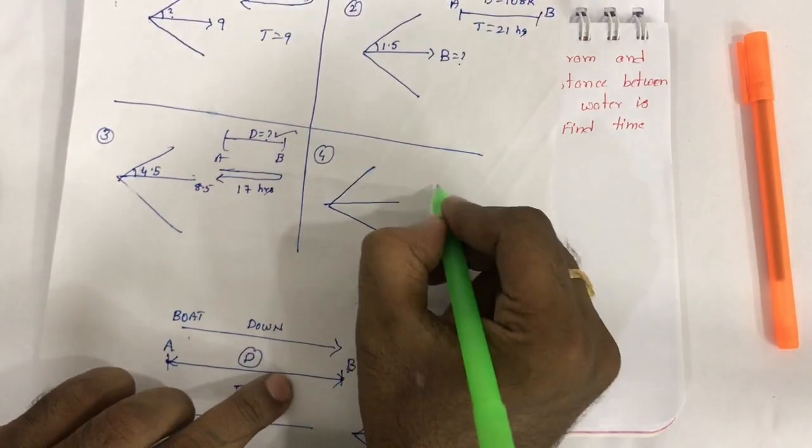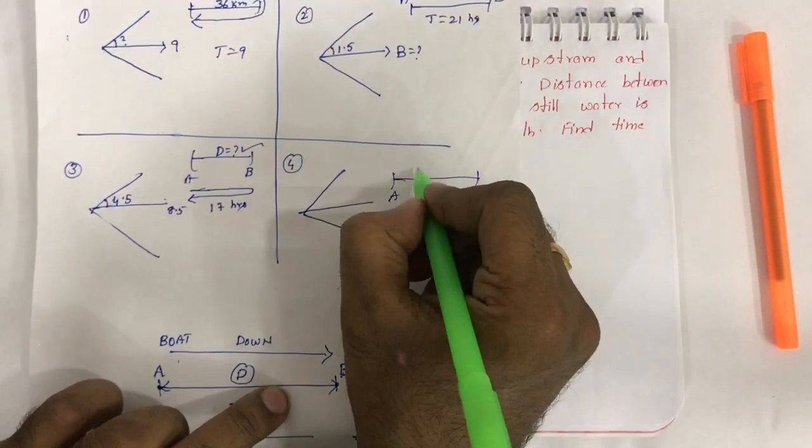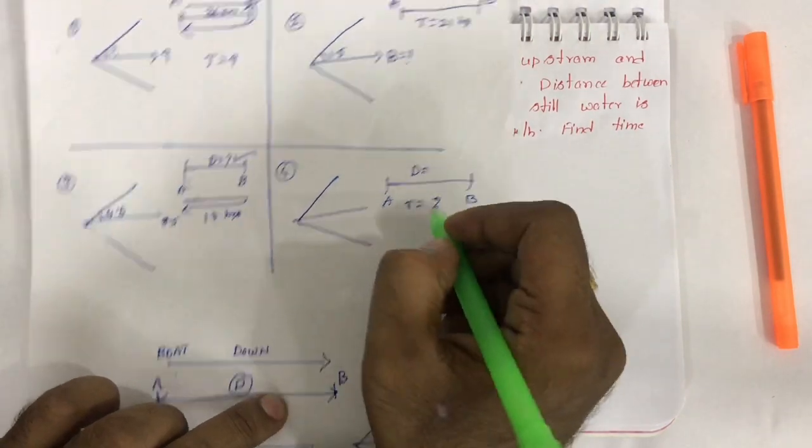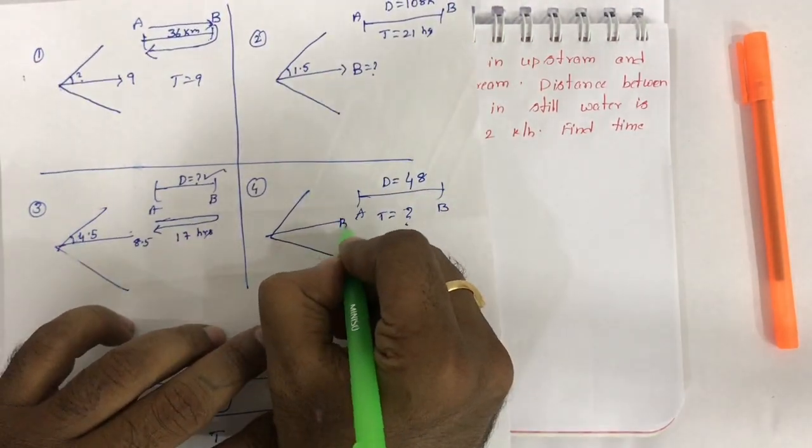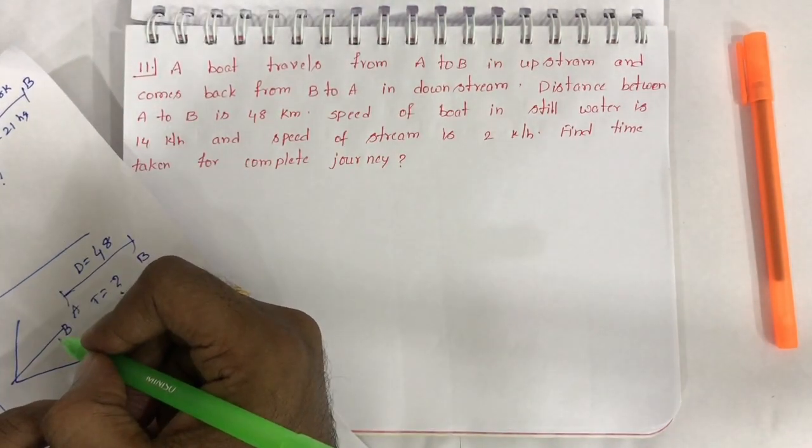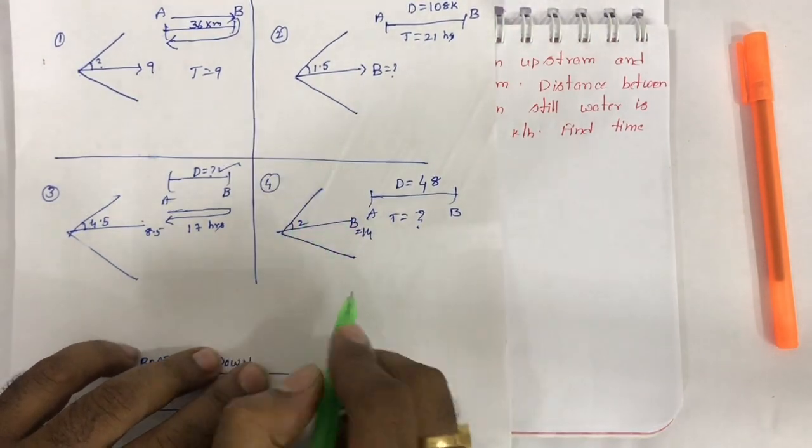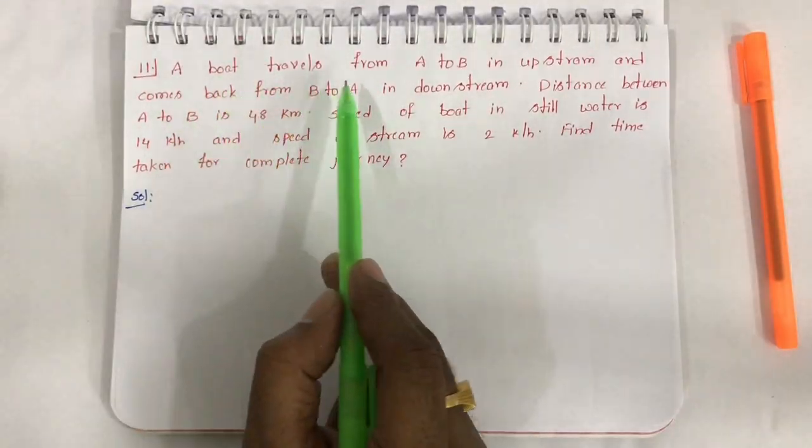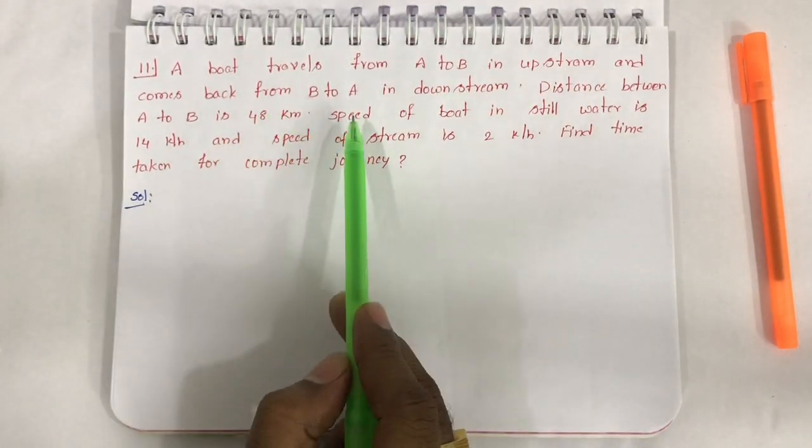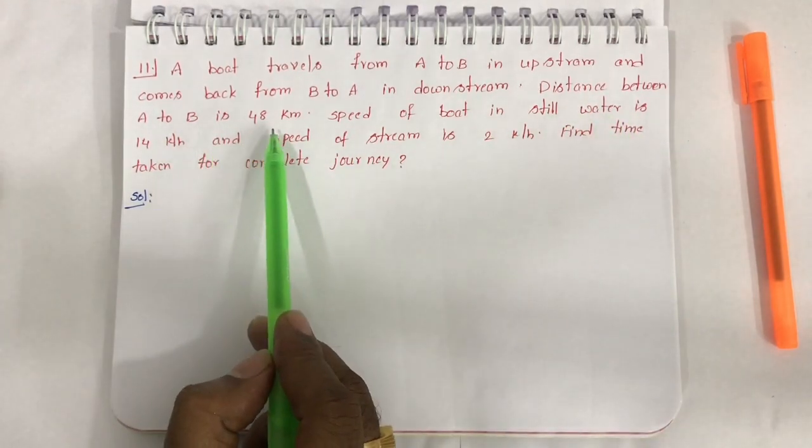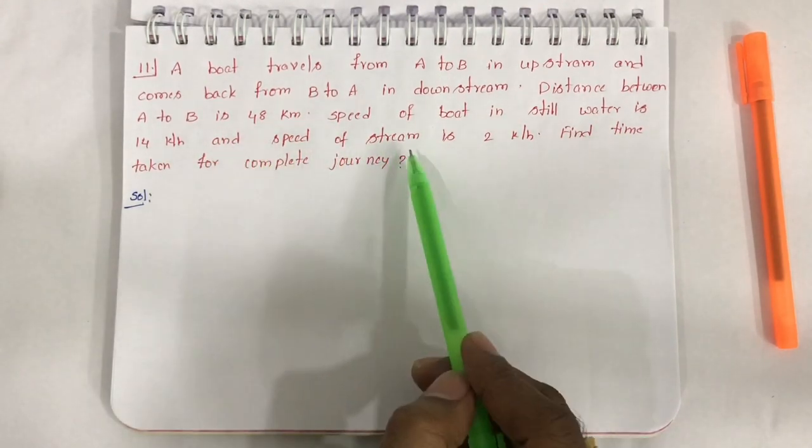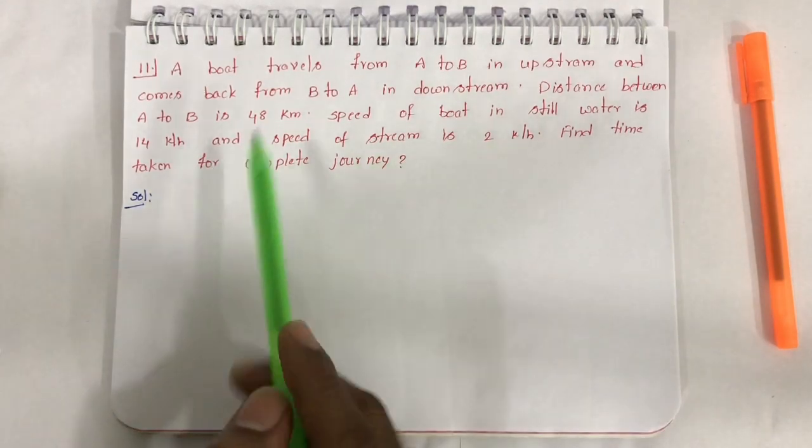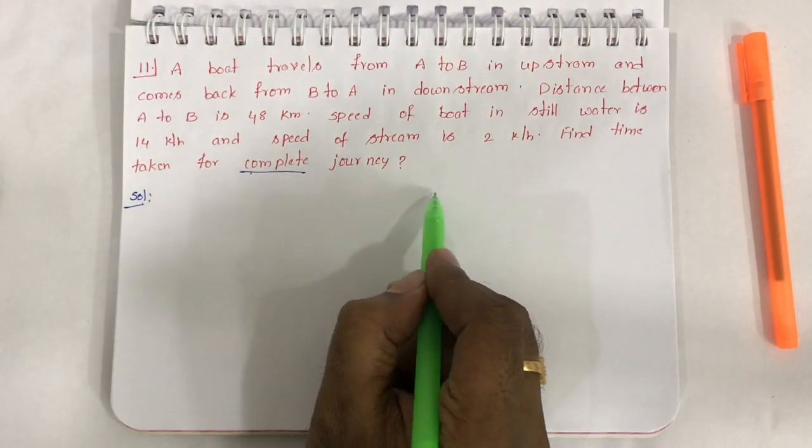In this model, we found distance when time was given. Next model: distance is given, find time. Fourth model: A boat travels from A to B in upstream and comes back from B to A in downstream. Distance between A to B is 48 km. Speed of boat in still water is 14 km per hour, and speed of stream is 2 km per hour. Find time taken for complete journey.